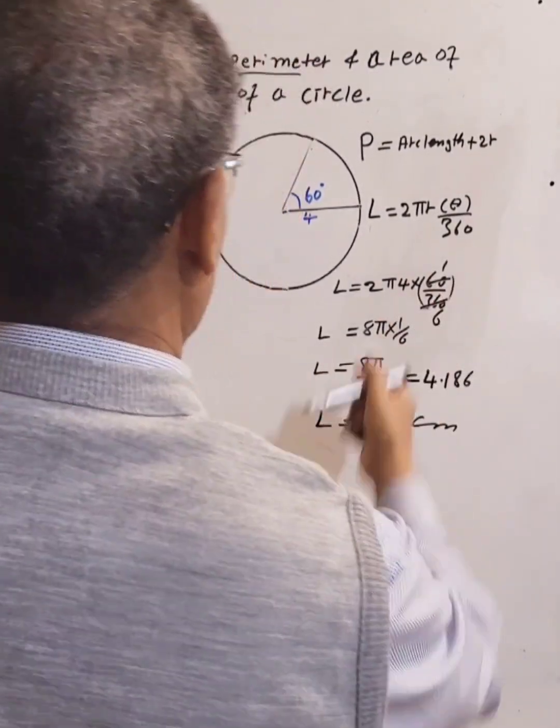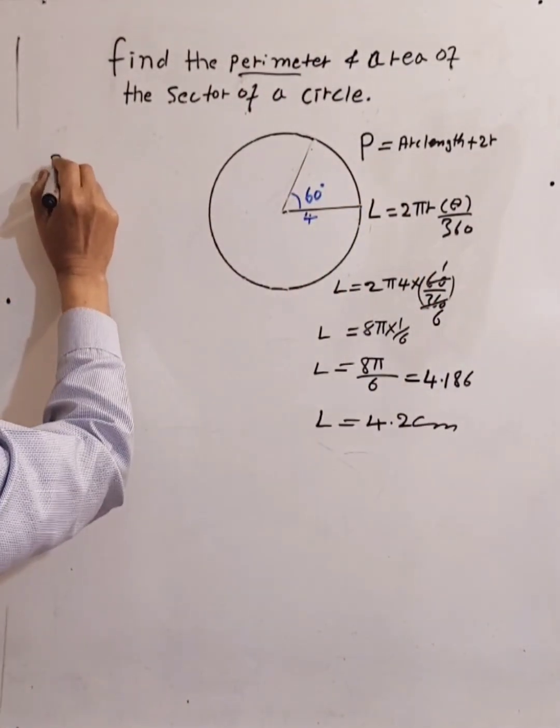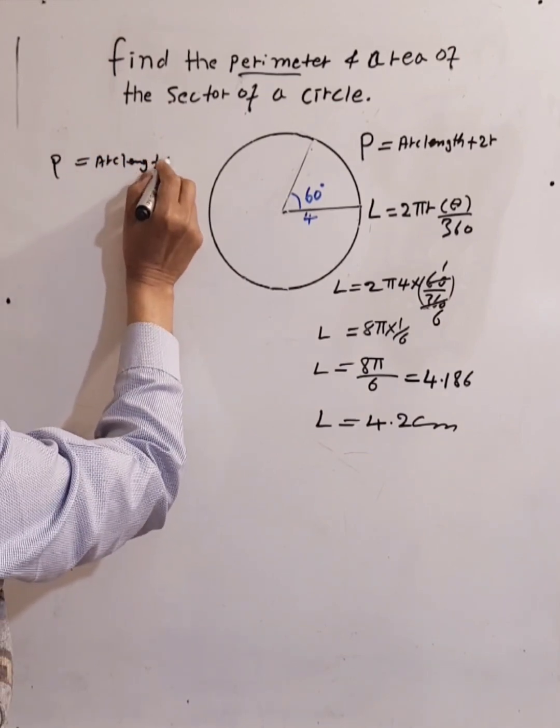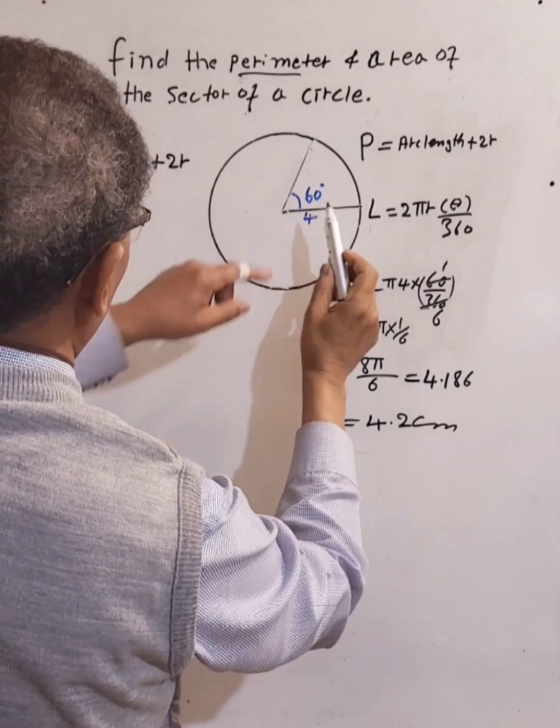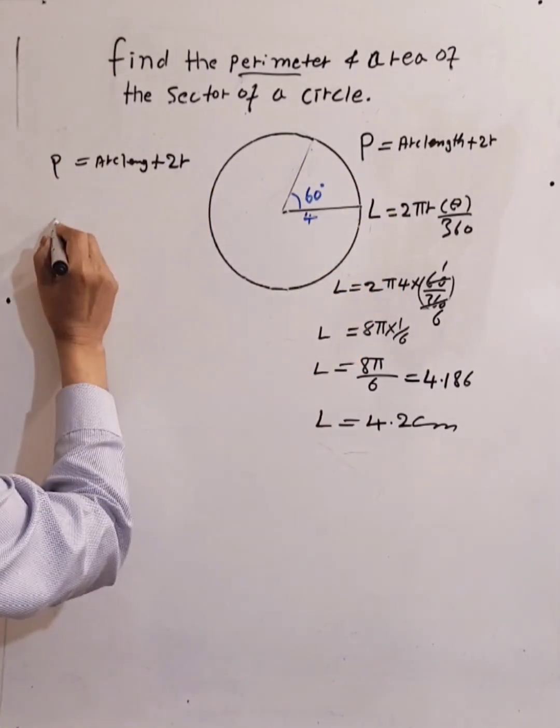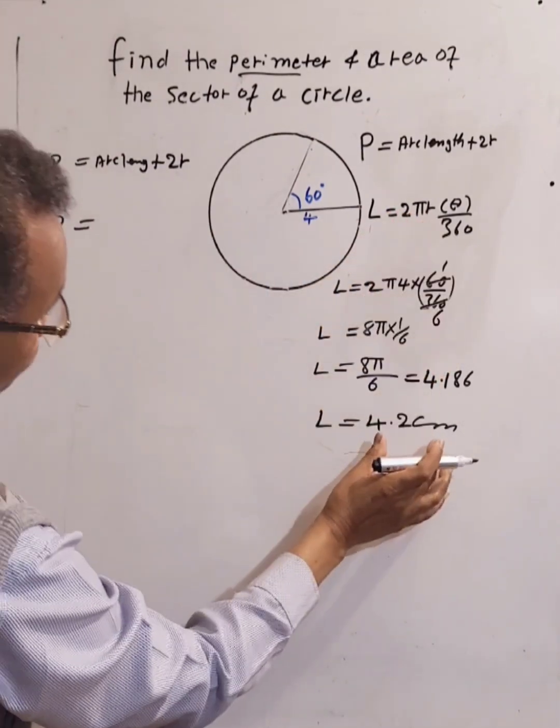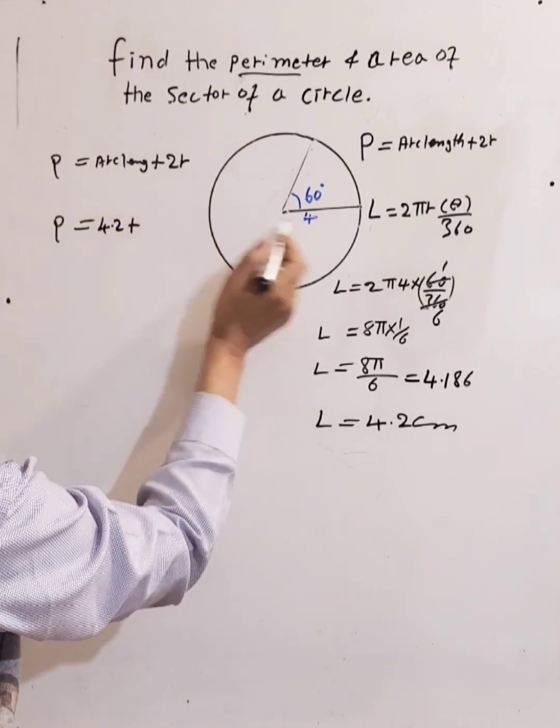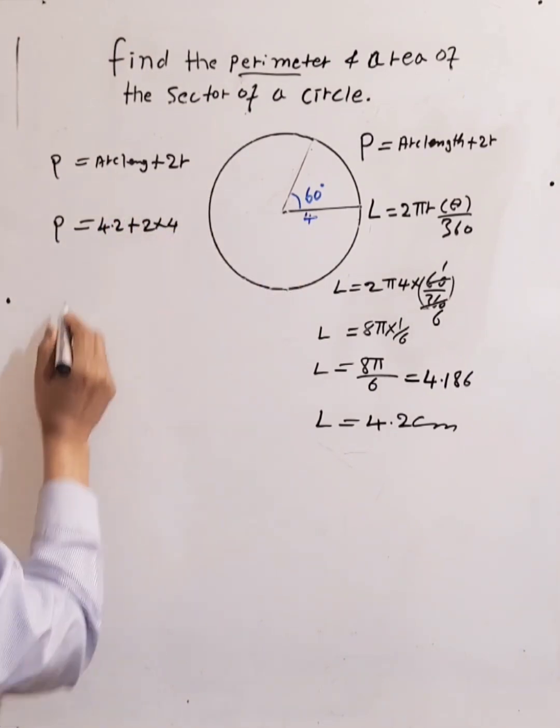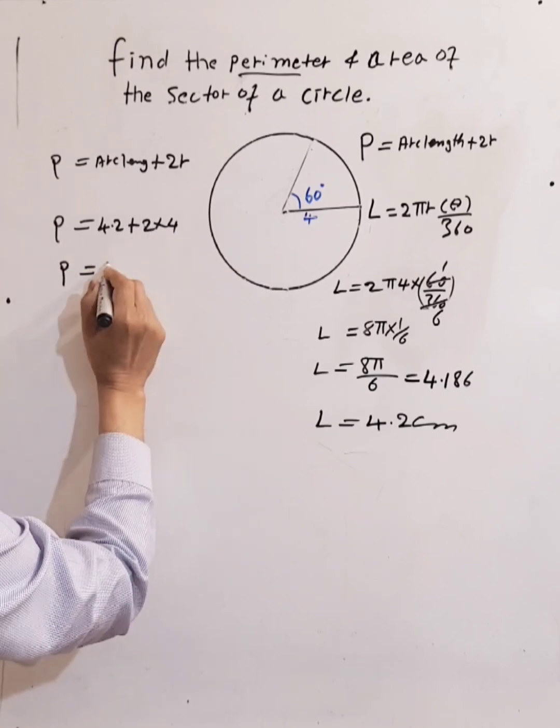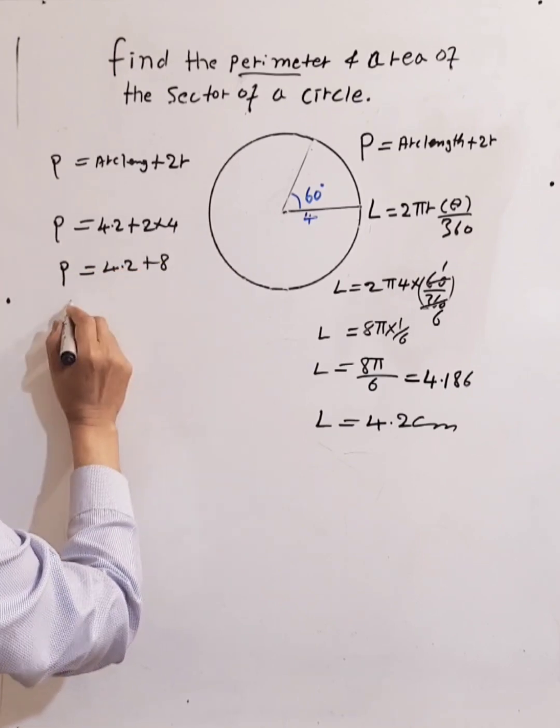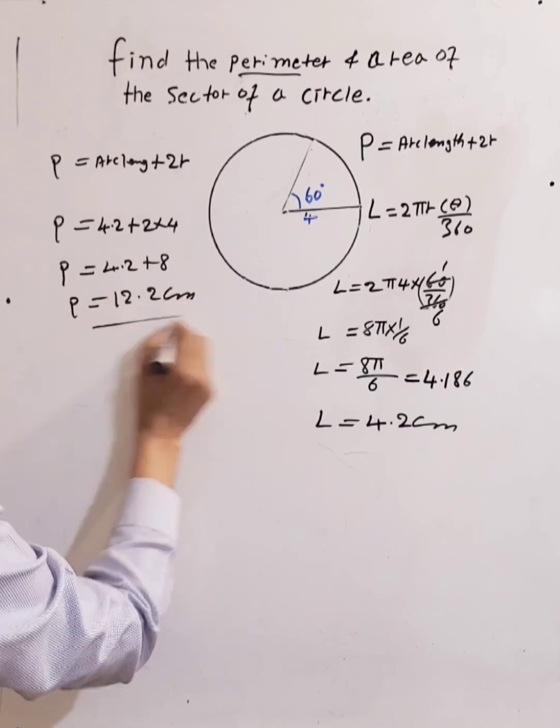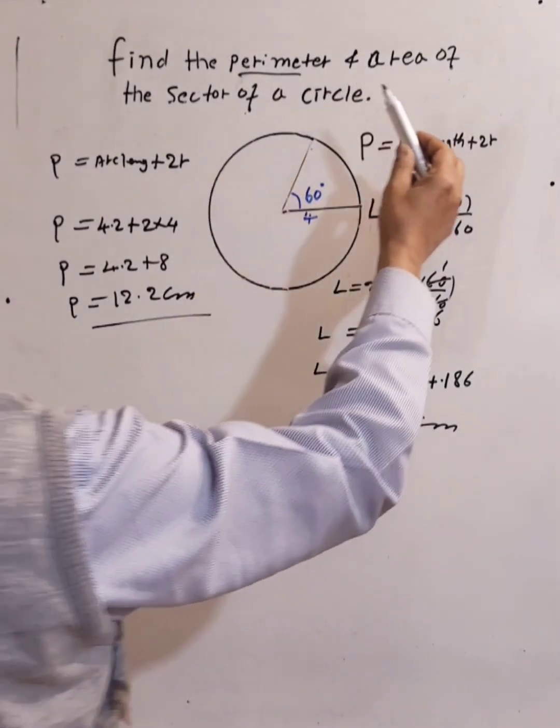Now from here you can calculate the perimeter. P equals arc length plus 2r, which is the radius. The arc length is 4.2 plus 2 times 4. This equals 4.2 plus 8, which equals 12.8 centimeters.